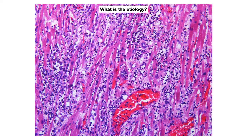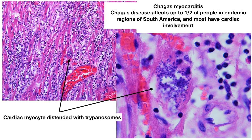The etiology of this lymphocytic myocarditis was Chagas disease — this is a Chagas myocarditis. Chagas disease affects about half of people in endemic regions of South America and is less commonly but still encountered in the United States. Most patients with Chagas disease have cardiac involvement. On the low-power view, the organism is visible in the center of the slide, and the close-up on the right shows the cardiac myocyte distended by trypanosomes.